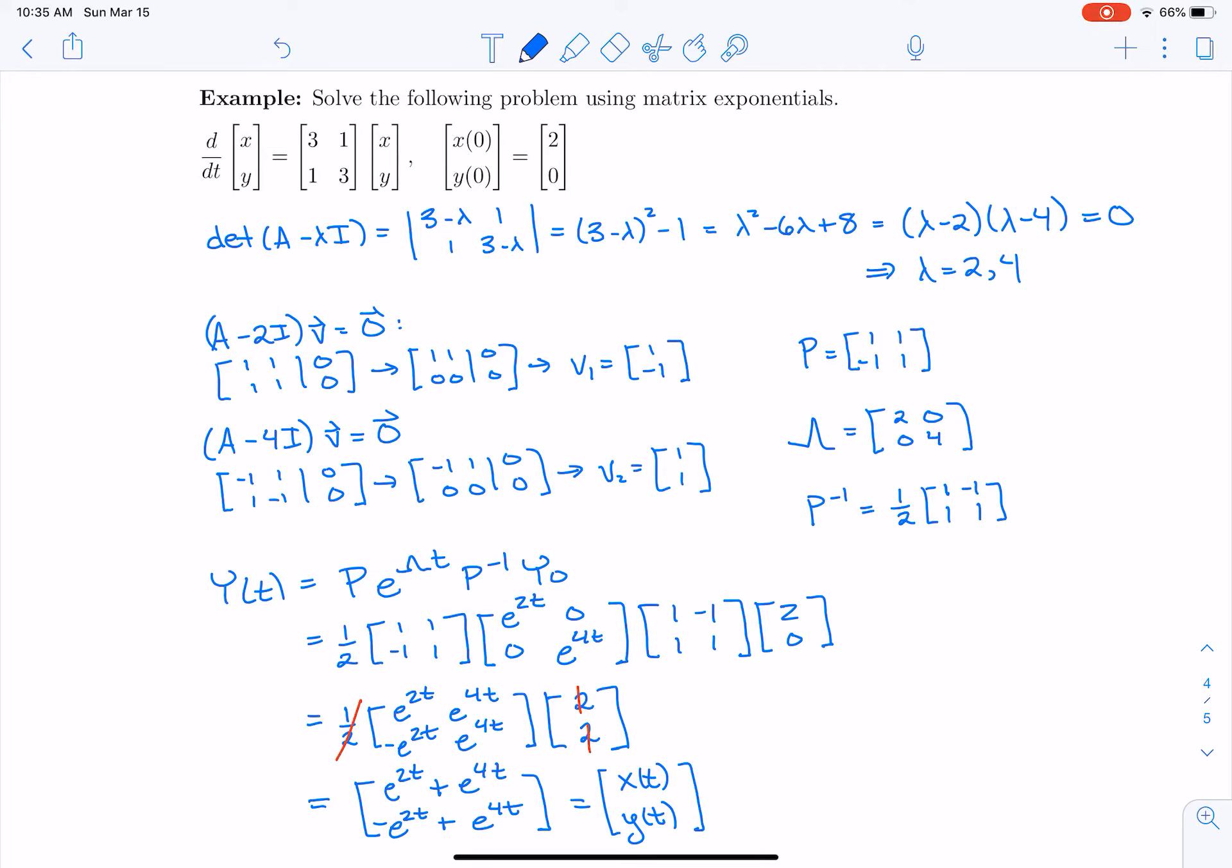And notice that we did not have to solve for the initial conditions separately this way. Once I found my eigenvalues and eigenvectors, and I multiplied by the matrices, then I can multiply those matrices for e^(At) times the initial condition [2, 0].